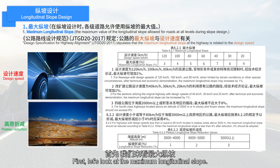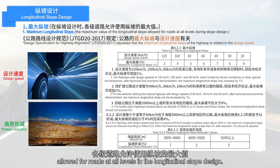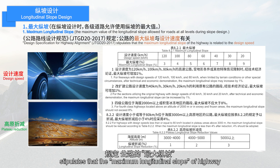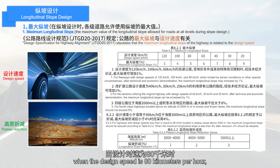First, let's look at the maximum longitudinal slope. The maximum longitudinal slope refers to the maximum value of longitudinal slope allowed for roads at all levels in longitudinal slope design. The design specification for highway alignment stipulates that the maximum longitudinal slope is related to the design speed. For example, under normal circumstances, when the design speed is 80 kilometers per hour, the maximum longitudinal slope is 5%.